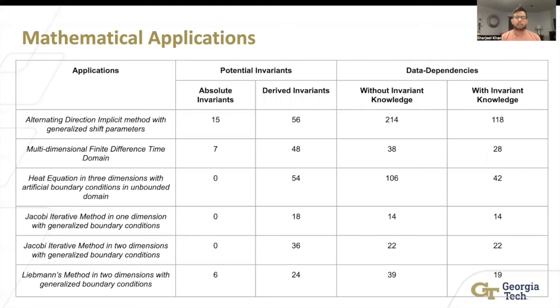These are bigger benchmarks from polybench. And you can see that without knowledge, there's 214 dependencies. With knowledge of the invariants which we give it, becomes 118. Without knowledge is 106. With knowledge, 42. So we're seeing these big jumps in the number of dependencies. Not always, like you can see here, 14, 14, 22, 22, but definitely a better improvement.